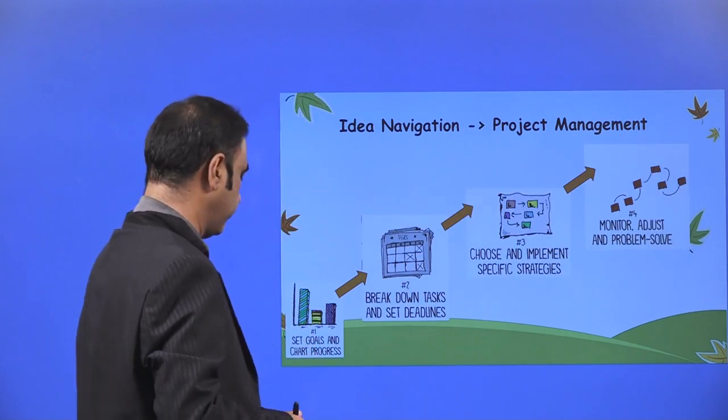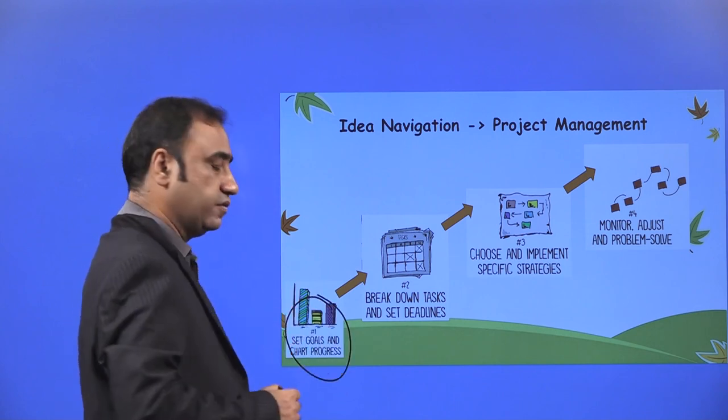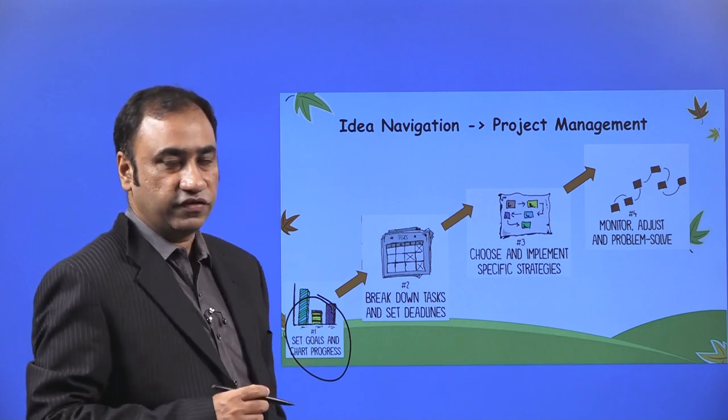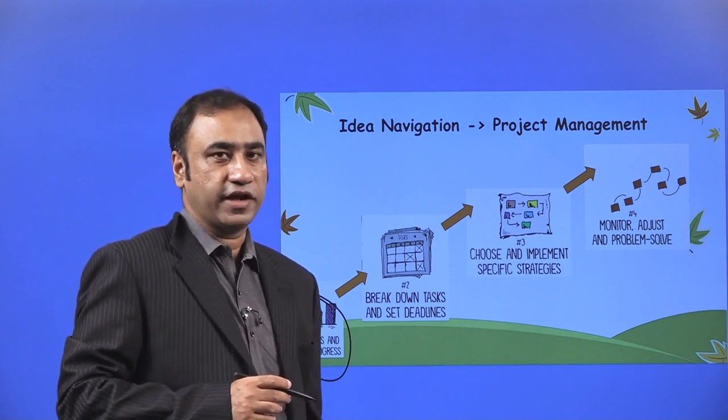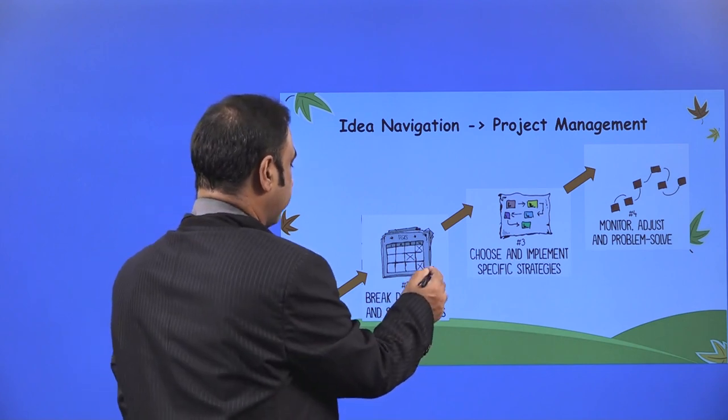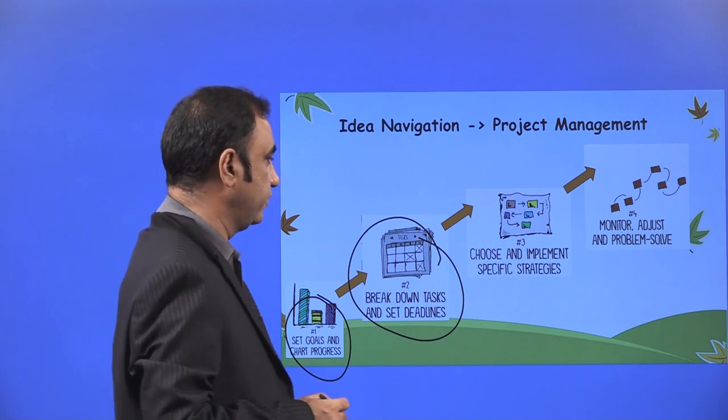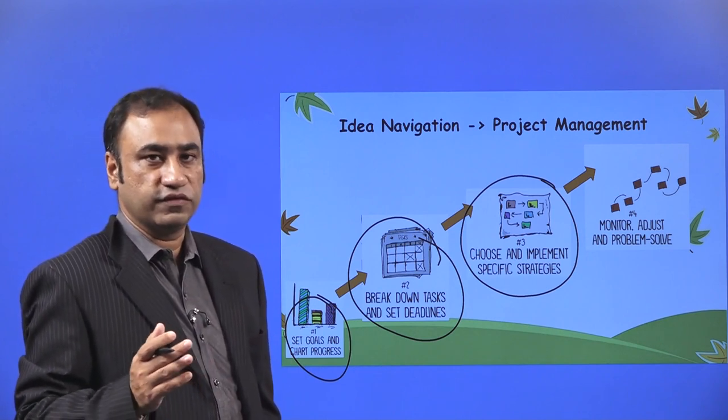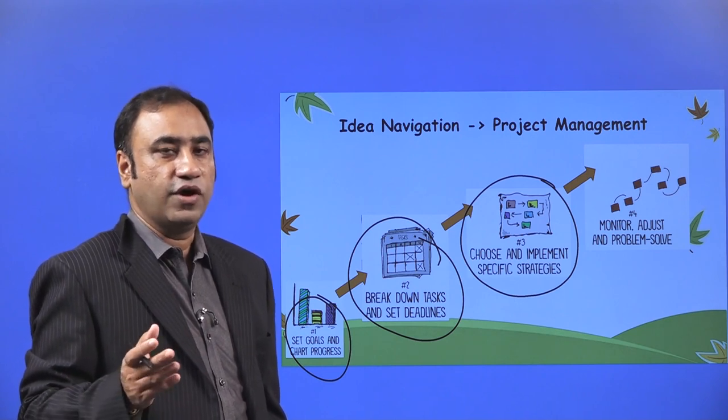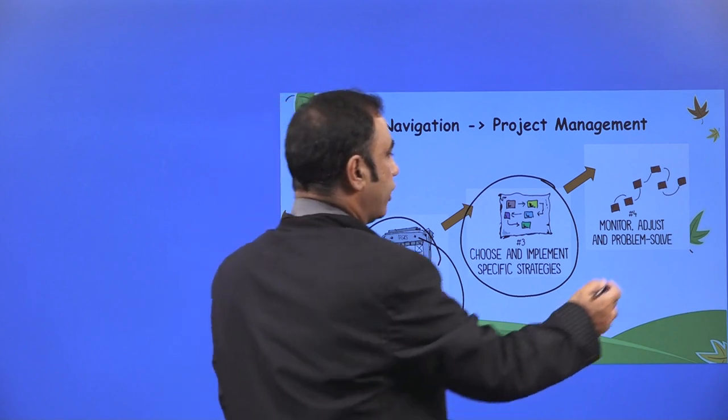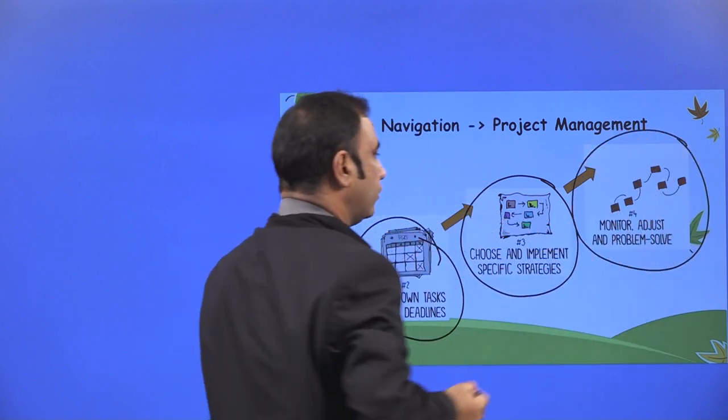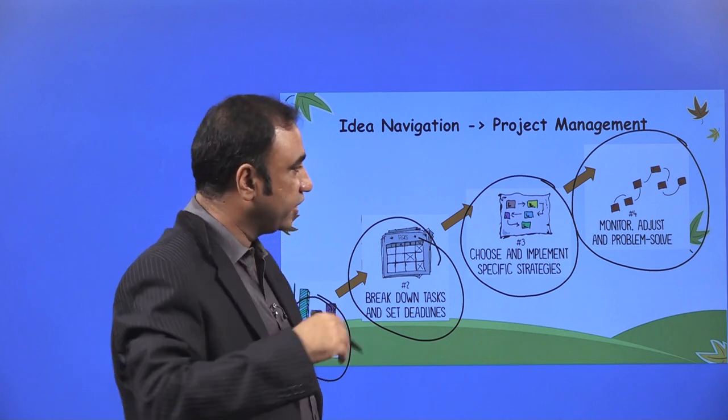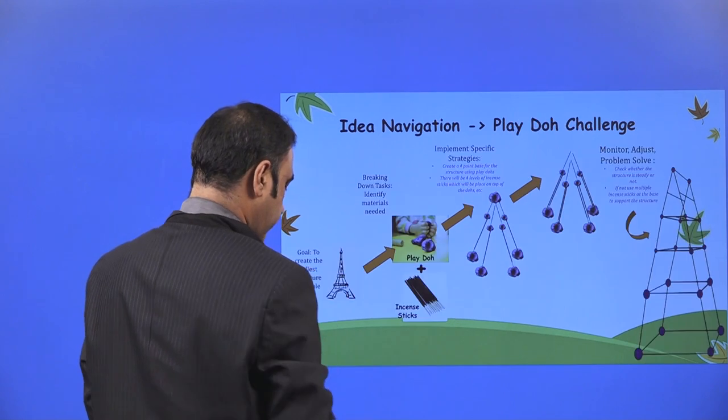Idea navigation as a project management process. First step: set goals and create your progress chart, where time boxing is important. You need to put each task and allot a time, then track that particular task. Break down the task and set deadlines. Choose and implement specific strategies. Each task will have its own set of specific strategies. Based on the specific strategies of that particular task, you have to create your own plans. Monitor, adjust and problem solve. Monitor it, adjust it, solve the problem, take feedback, and if it needs changes, come back to the same cycle.